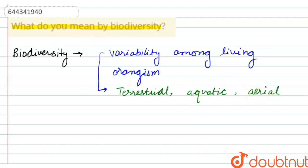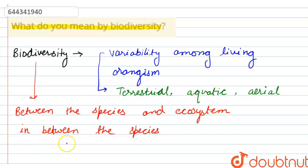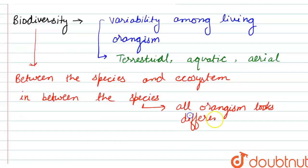The variability in biodiversity could be between species and ecosystems, or between species where one or more species interact in the ecosystem having different areas of living. It could also be within the same species, where all organisms look different. So basically, biodiversity means the variability among living organisms.